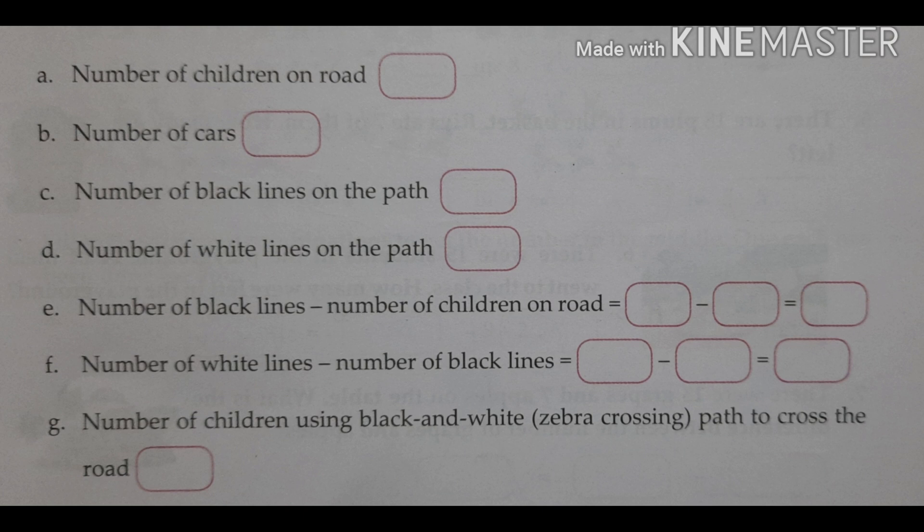Last one is number of children using black and white. Black and white, that is called, I told, zebra crossing. Yes. Path to cross the road. So number of children using black and white lines. Okay?